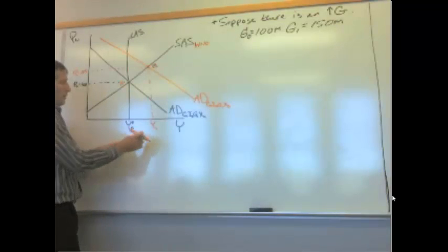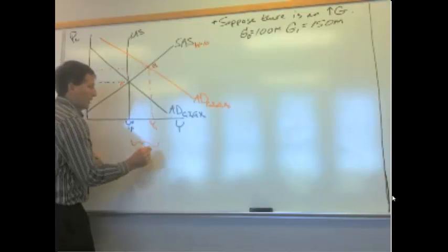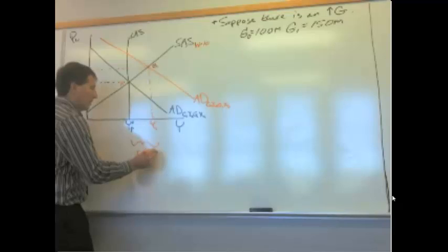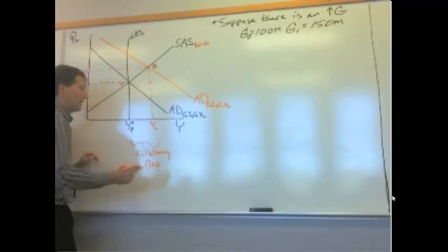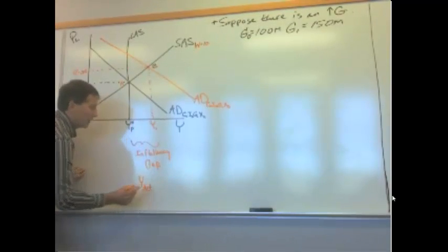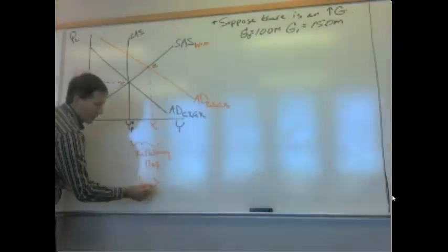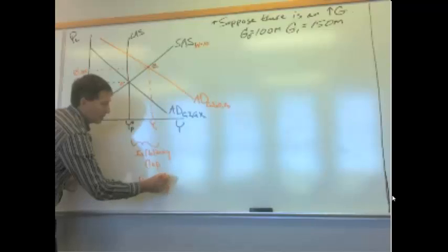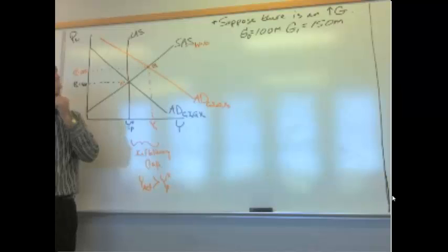Here we have an inflationary gap. An inflationary gap. By definition, all we're saying is that the actual level of real GDP is greater than the long-run potential level. We have an inflationary gap.